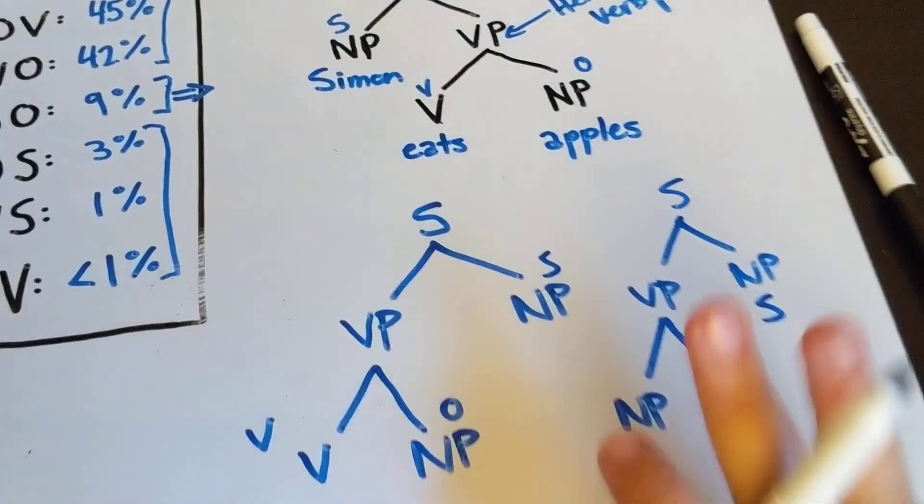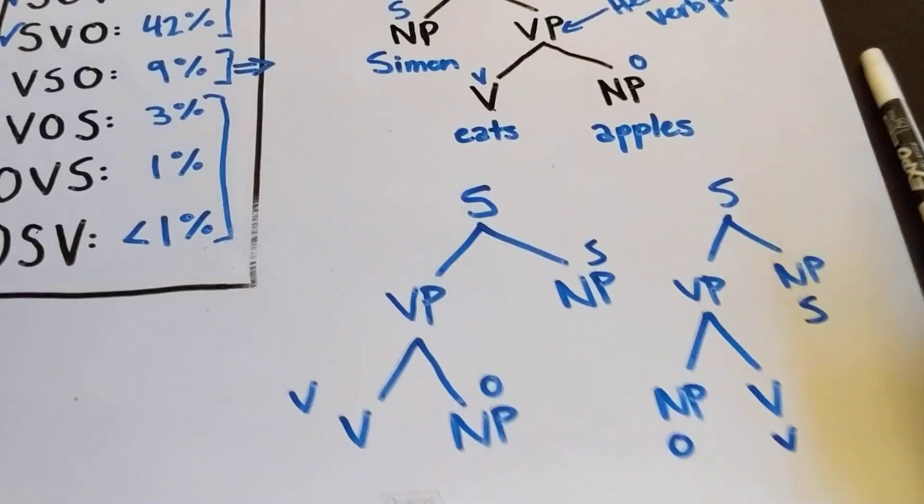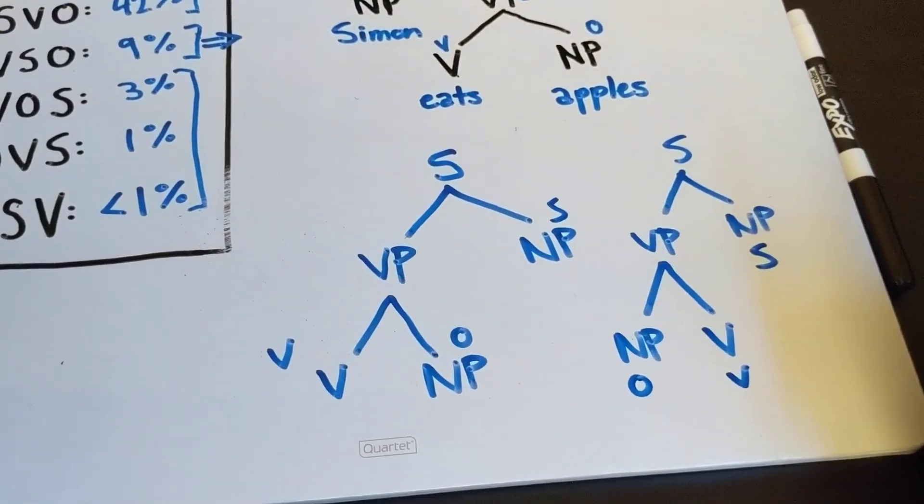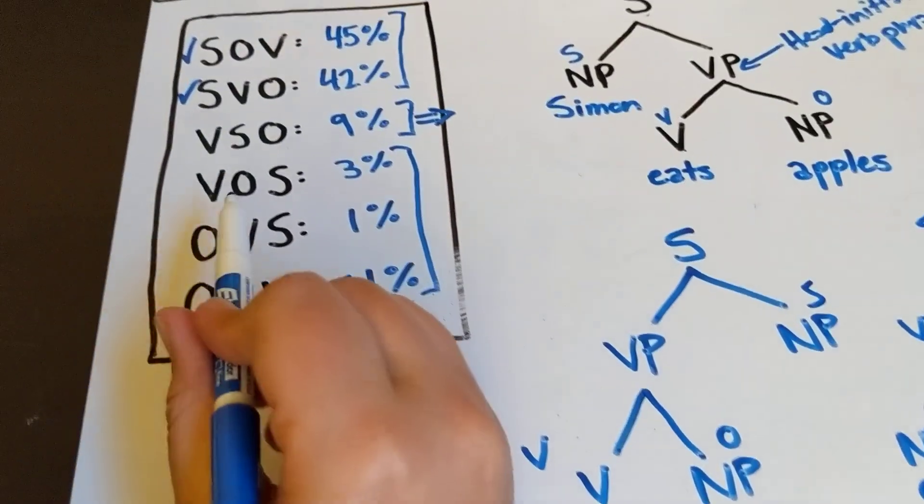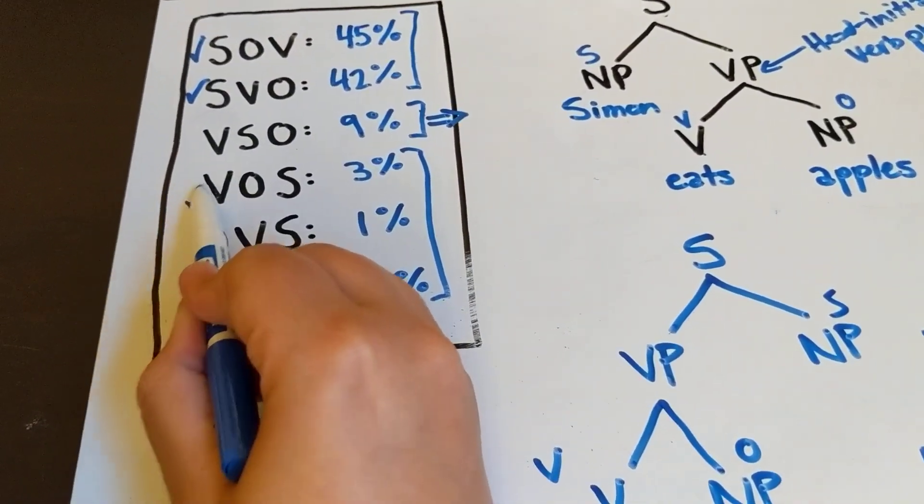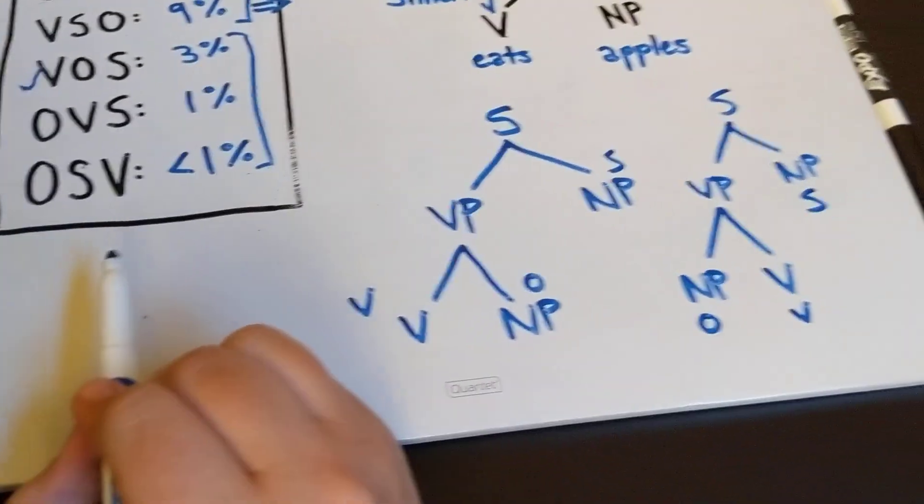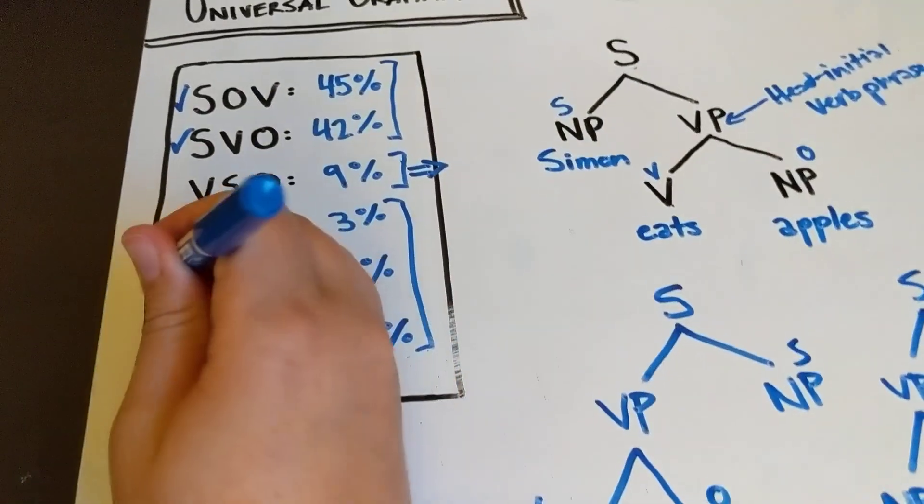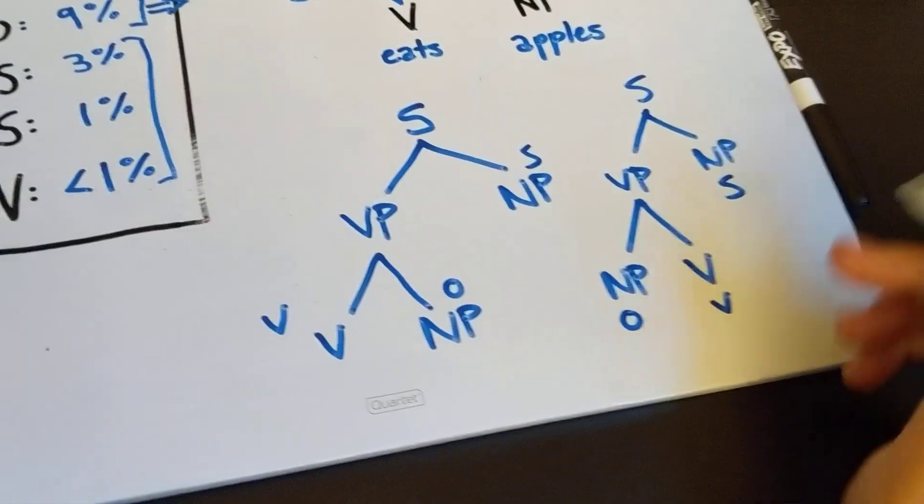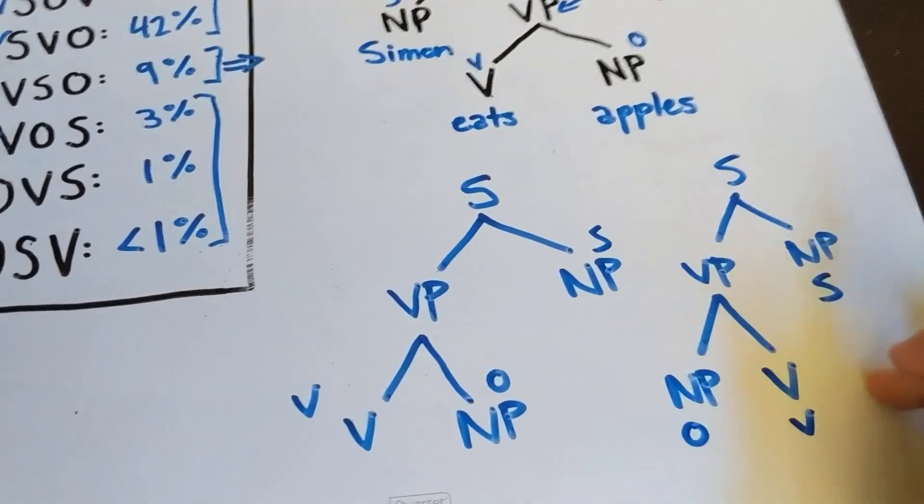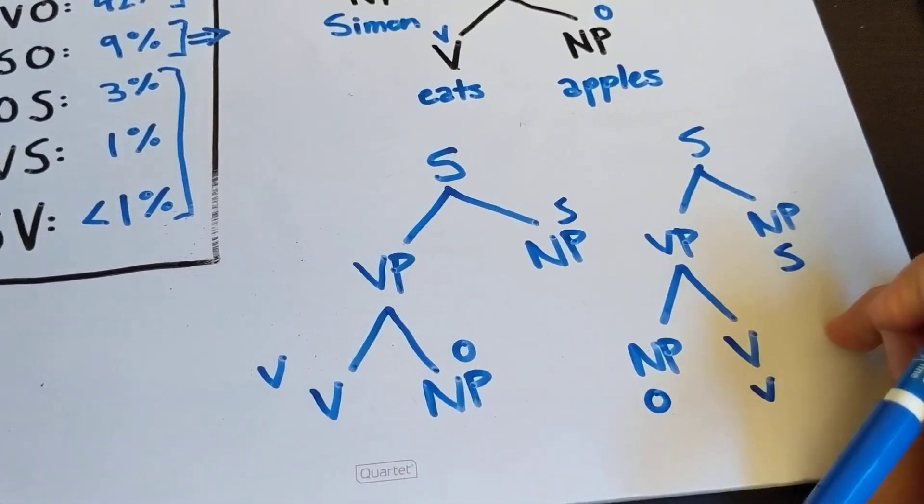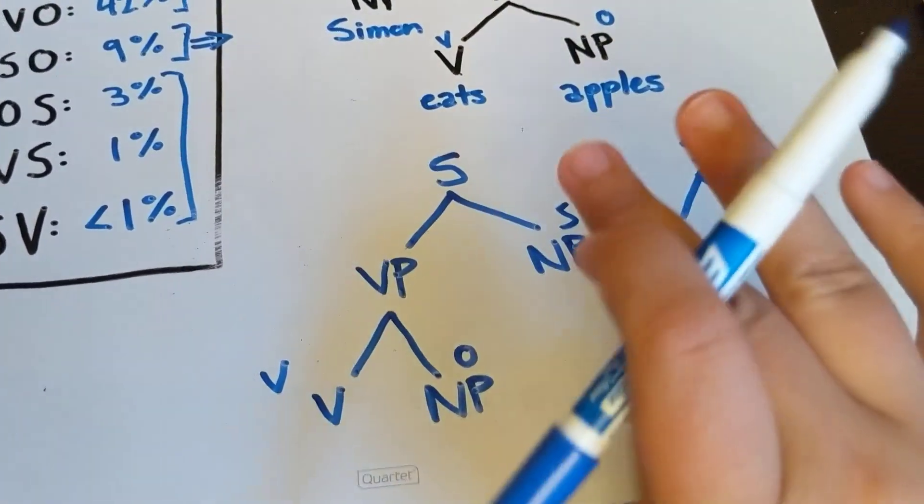Now, once you start studying syntax, most syntacticians don't think that this is the actual structure for the VOS, over here, and the OVS word order. Most syntacticians now think that these are derived in a different way.